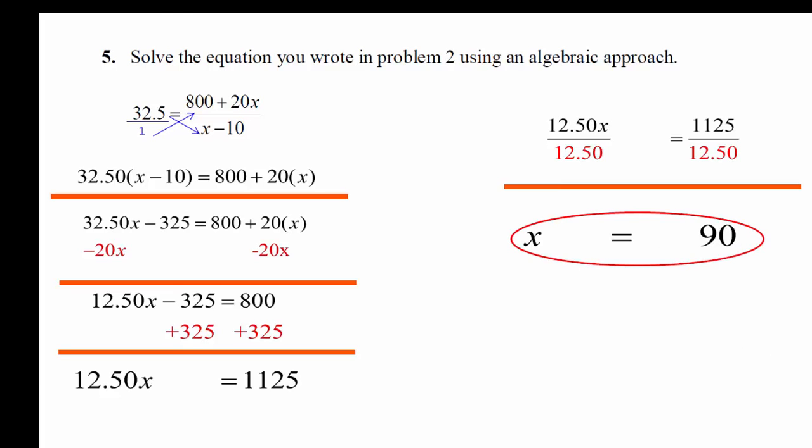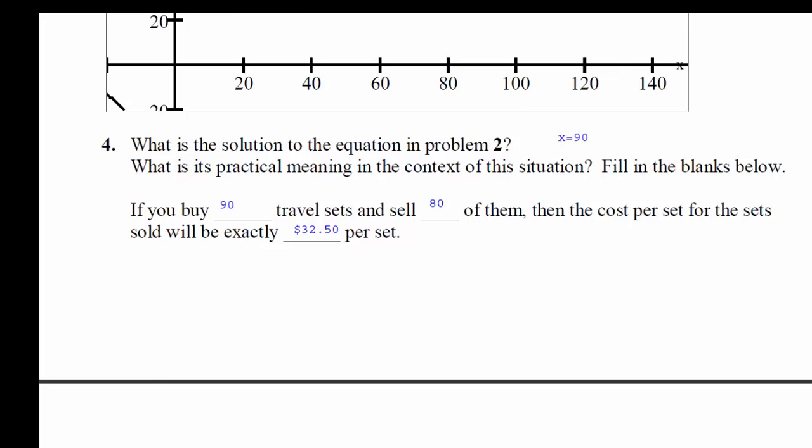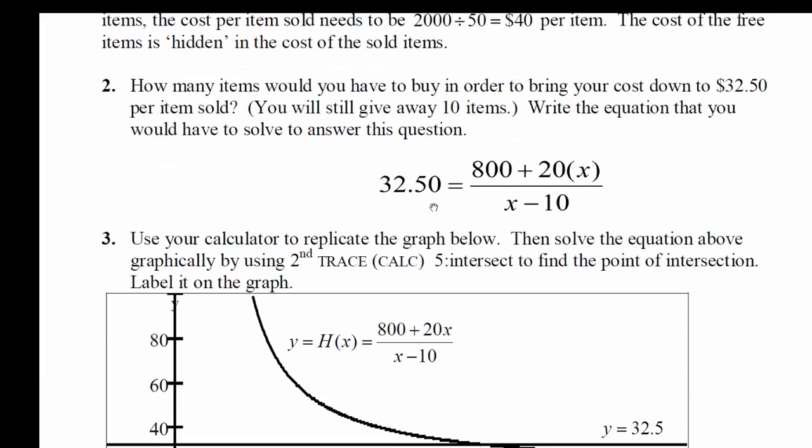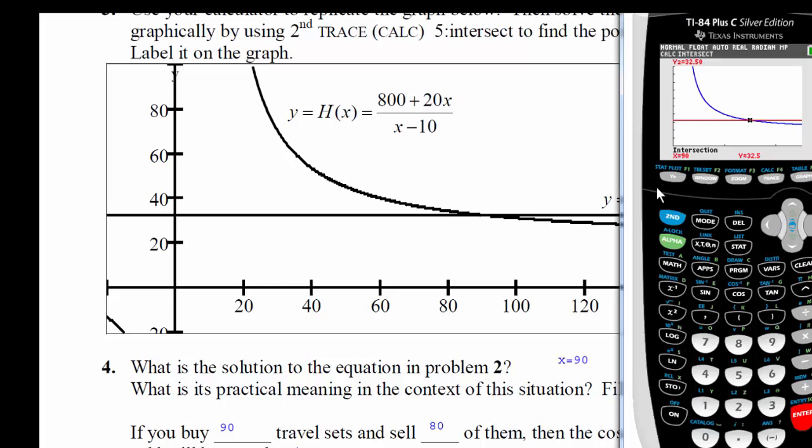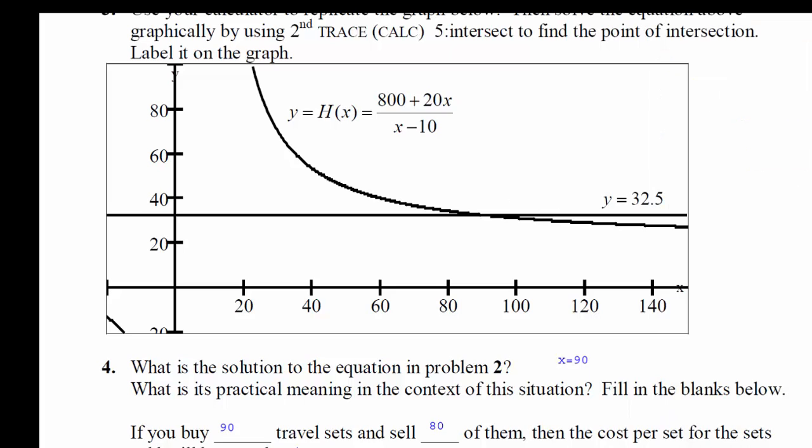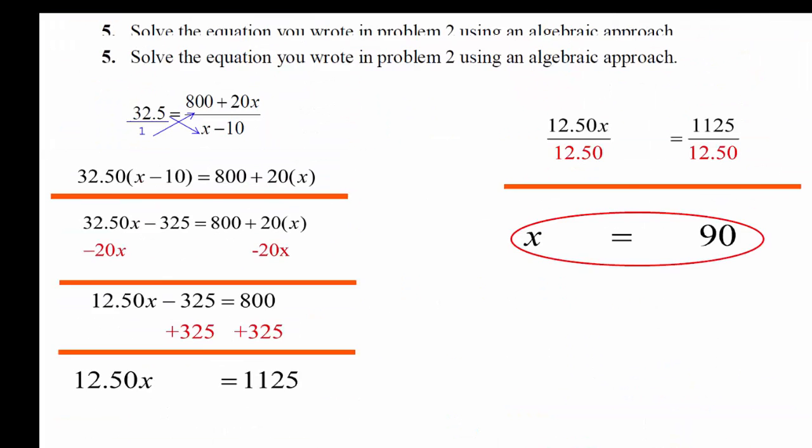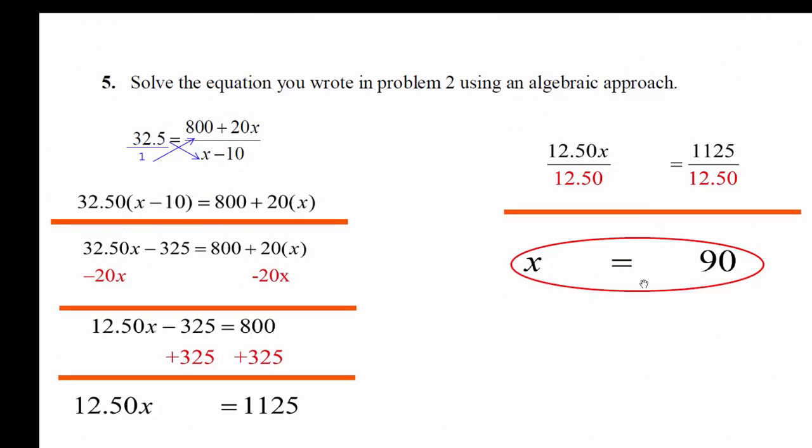So again, this x equals 90 matches our work when we graphed this. When we graphed both sides as an equal sign and found the intersection, that happened at x equals 90. So we solved it graphically. And then we used algebra to solve the same problem. And we got the same answer, or we arrived at the same answer. So in the next video we'll solve a few more problems or a few more equations algebraically.